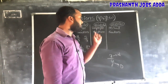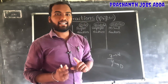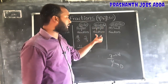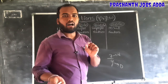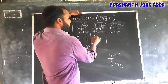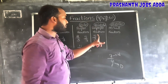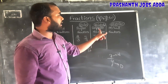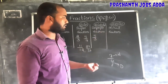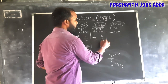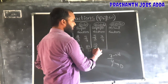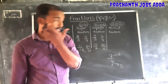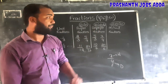Improper fractions — if the numerator is greater than the denominator, it is called an improper fraction. For example: 5 by 3, 7 by 4, 10 by 7, 25 by 6. In all these, the numerator is larger than the denominator — these are improper fractions.